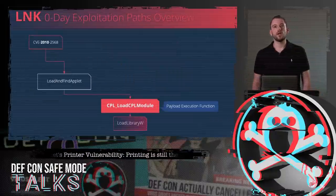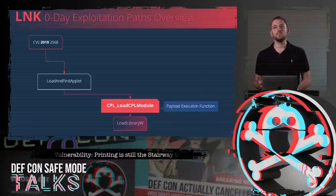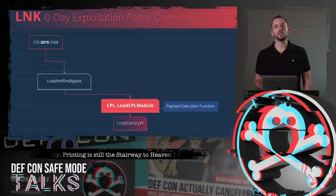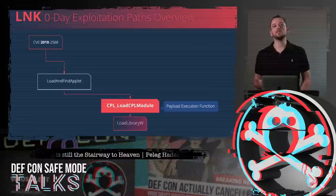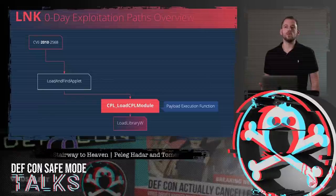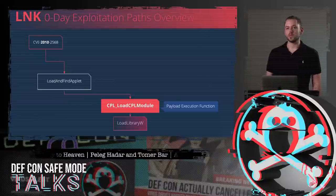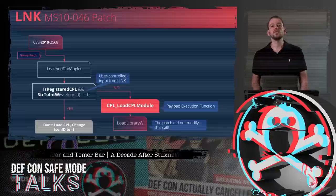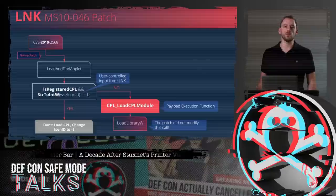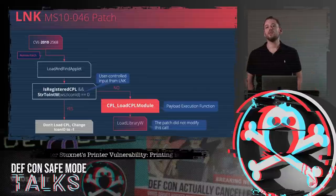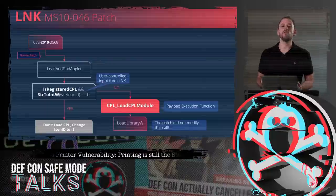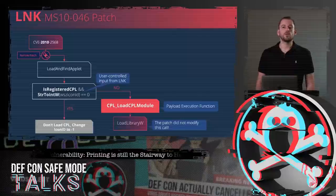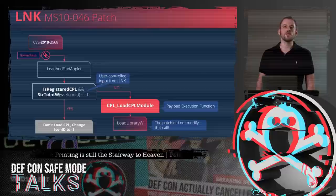Let's look at the exploitation path and how it was patched. The main problem was that instead of loading the CPL DLL file as a data-only file using LoadLibraryEx, the code called the LoadLibraryW function and also executed the DLL. The patch added two validations: first, it checked that the provided CPL file was on Microsoft's whitelist; second, the icon ID would be extracted and if it was 0, it would be overridden with minus 1, meaning it wouldn't be loaded. However, the patch was very specific — the LoadLibrary function still existed, meaning that bypassing the validations would still allow the CPL to be executed.